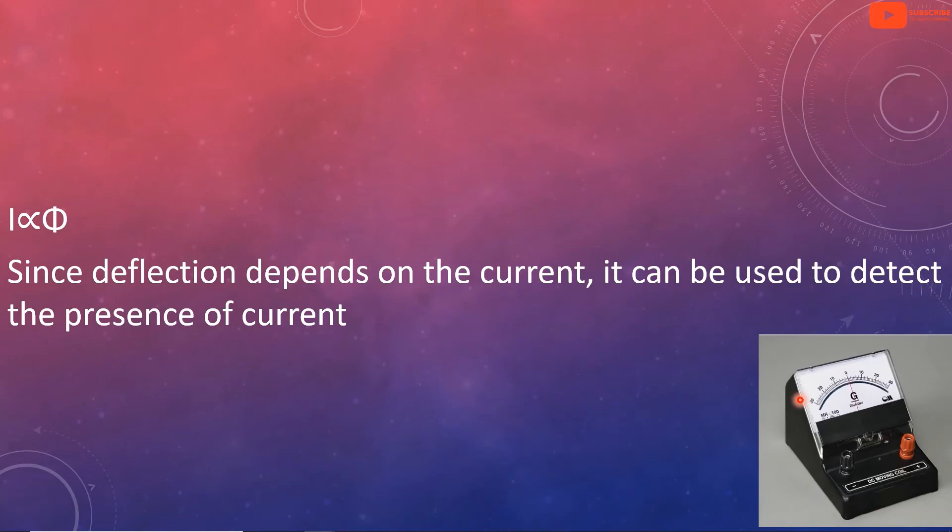Deflection depends on current, so it can be used to detect the presence of current. If the current is zero, there is no deflection. If current is present in the circuit, the pointer deflects.